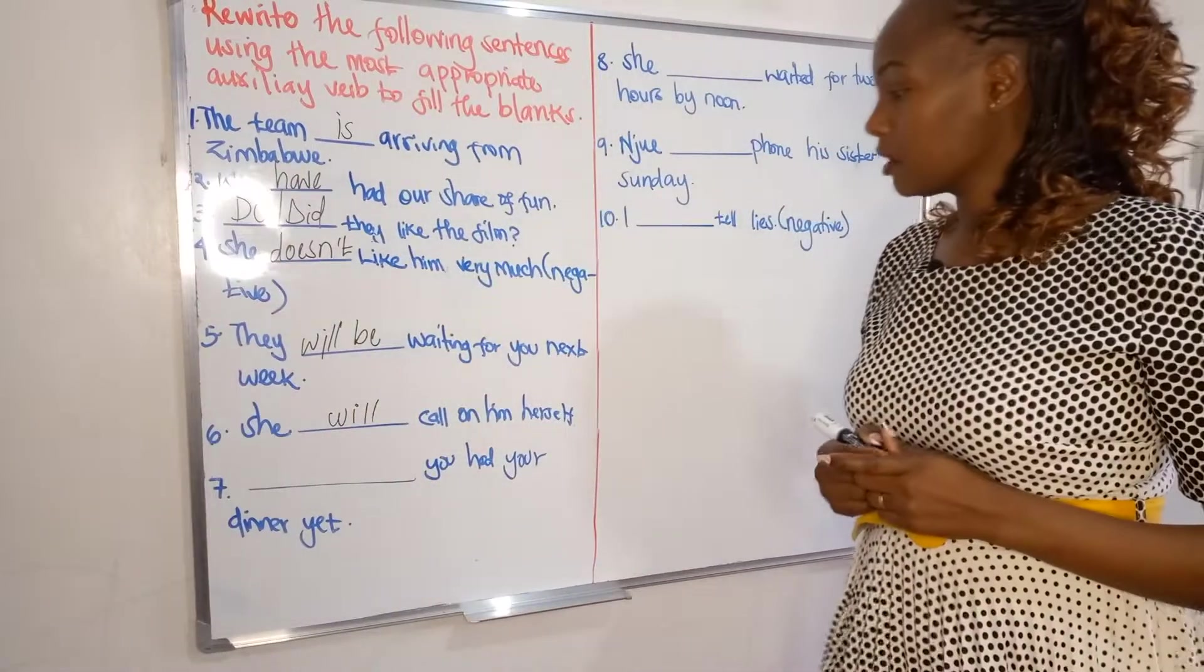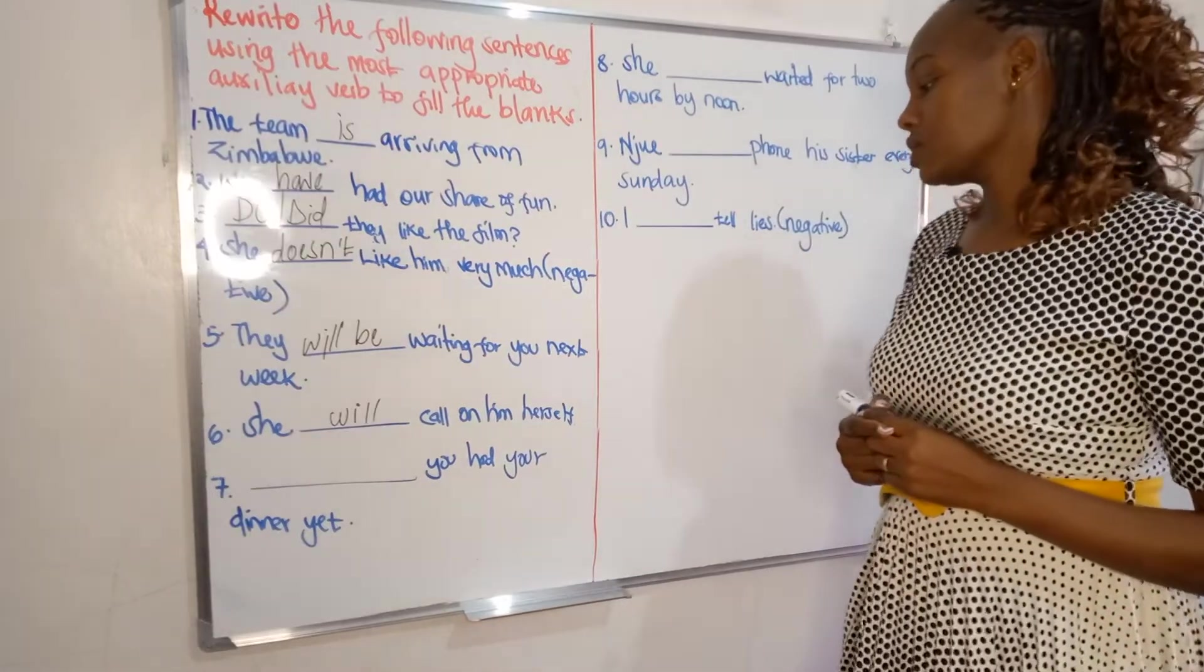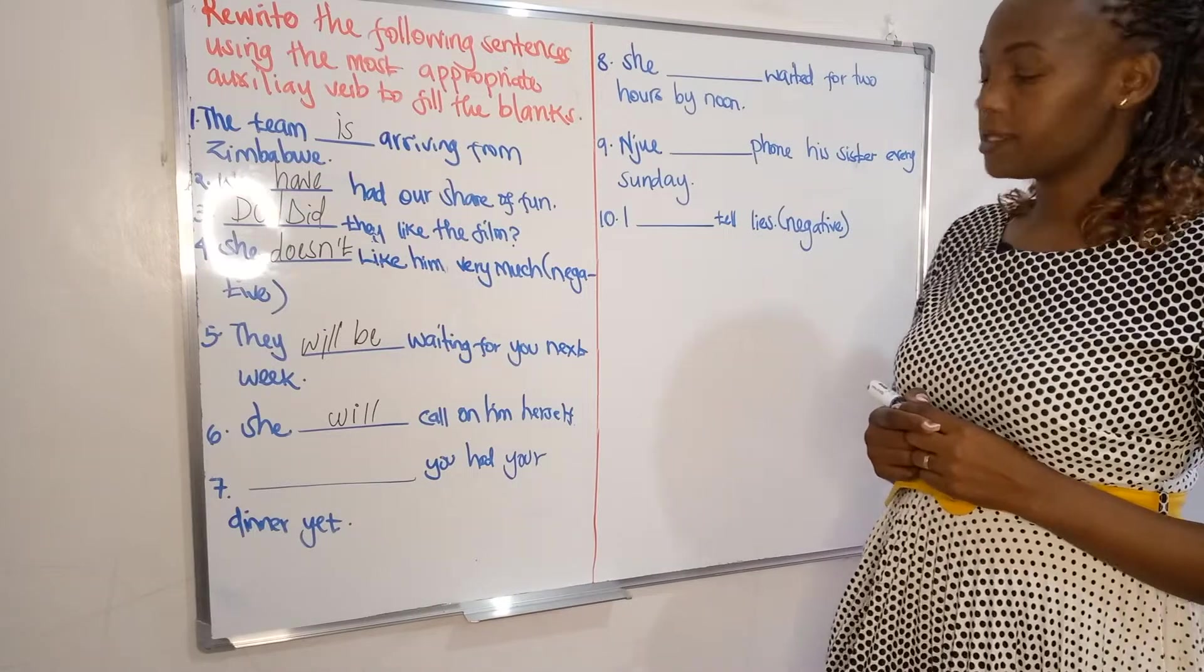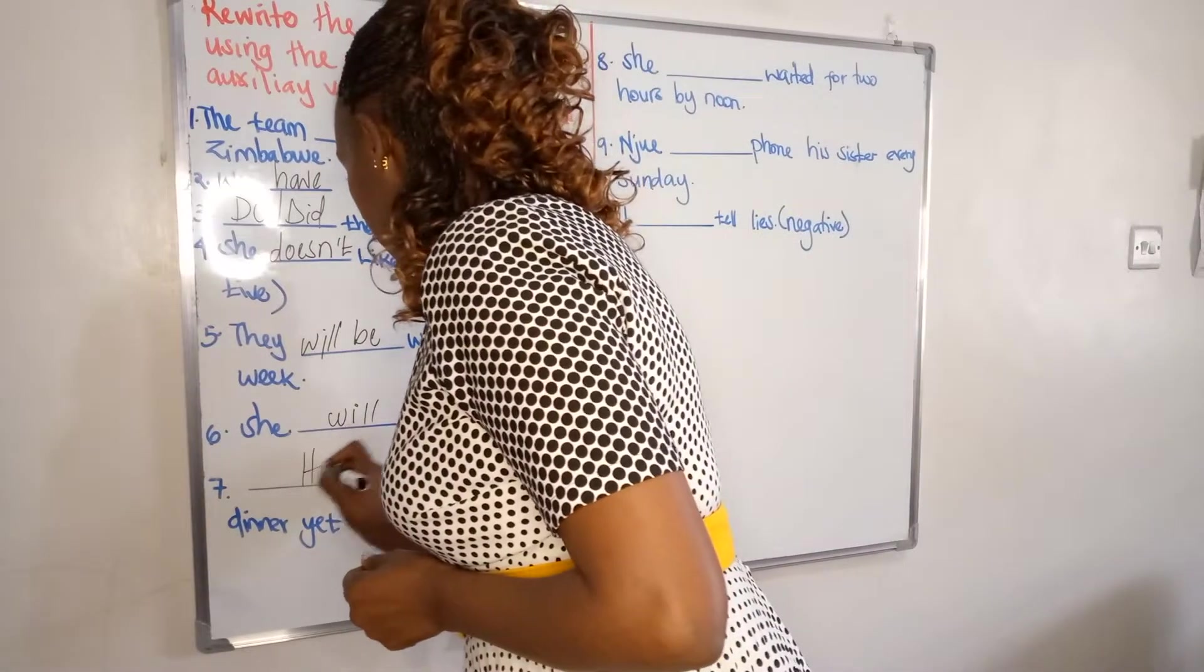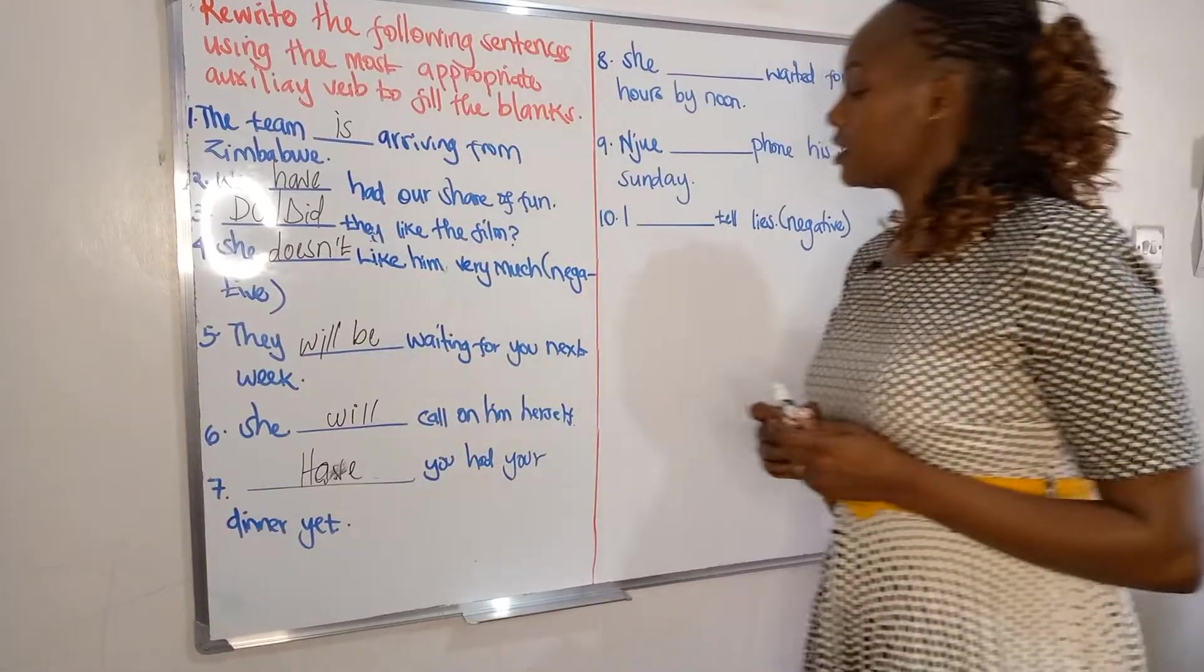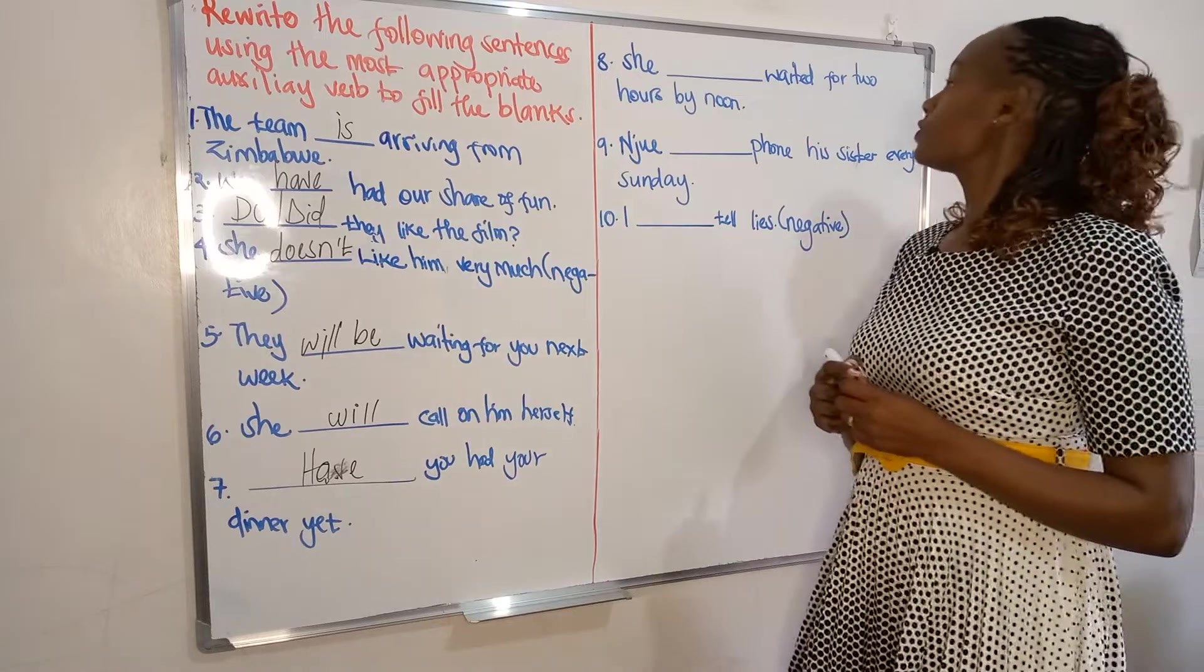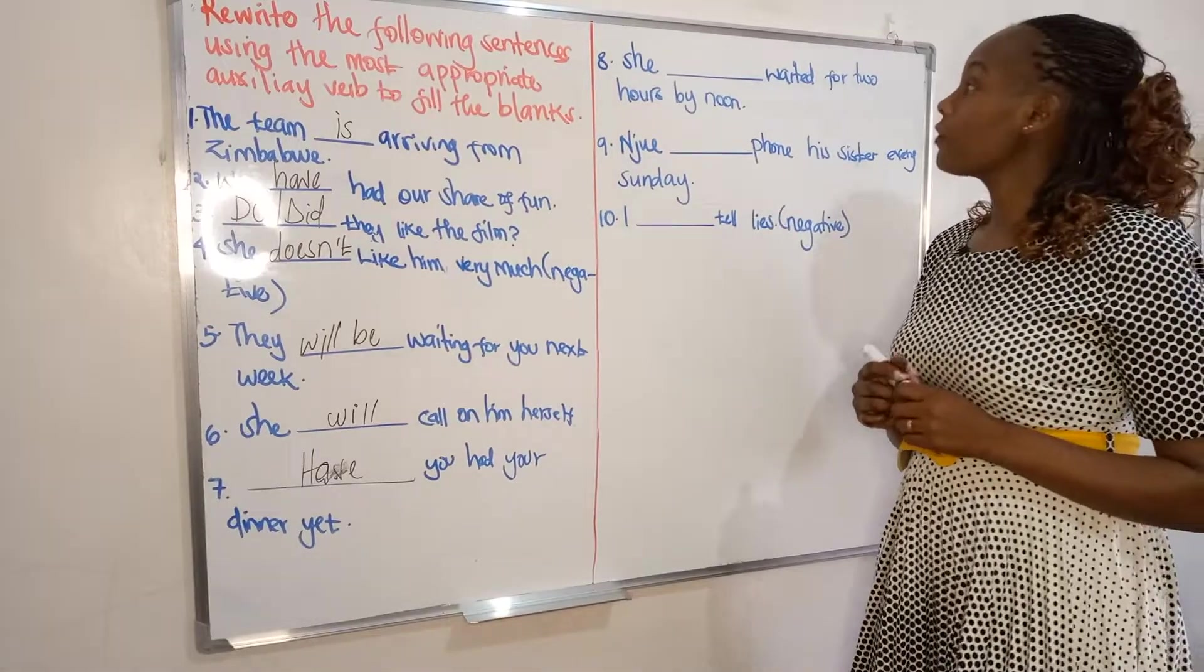Number seven: dash you had your dinner yet? Have you had your dinner yet? Number eight: she dash waited for two hours by noon.